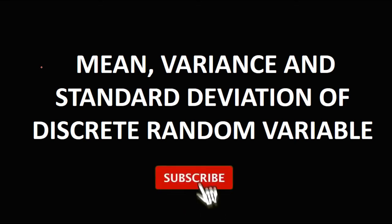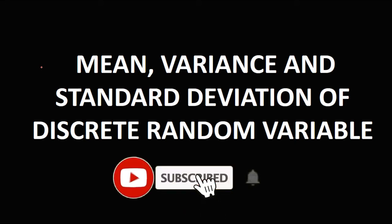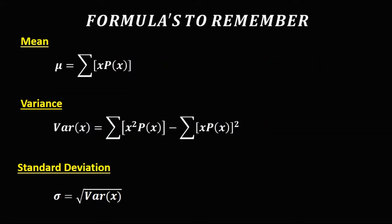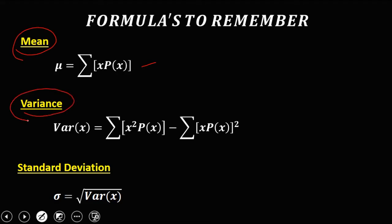Finding the mean, the variance, and standard deviation of a discrete random variable. These are the different formulas we're going to use: this formula for the mean, this formula for the variance, and for the standard deviation, that's the square root of the variance.